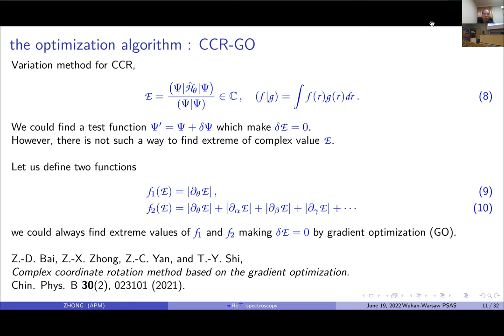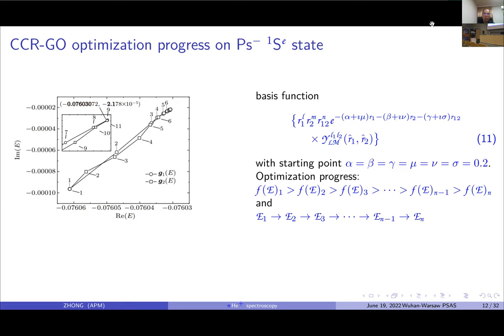Here is an example of optimization progress in PS minus ion, and we use basis functions in this type. The nonlinear parameters are all real and positive. You can see that we start at the same point and reach the same end by using two different optimization paths.